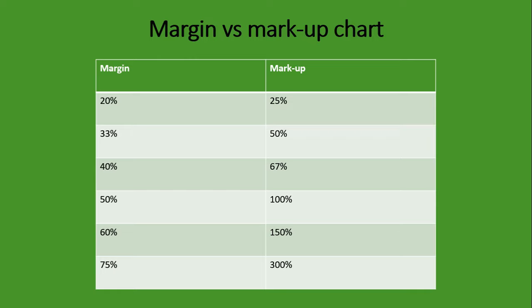Looking at the chart: for the same value of profit, the margin will always be lower than the markup. For example, if the margin is 20%, the markup is 25%; margin 60% equals markup 150%; margin 75% equals markup 300%. The higher the margin, the more the markup increases. Always remember — with the margin, selling price equals 100%; with the markup, cost price equals 100%. And the denominator: margin uses selling price, markup uses cost price. Hope that makes sense. Till next time.